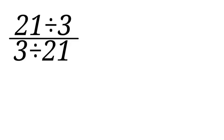Let us start solving from the numerator. Here we have 21 divided by 3, that will give us 7. So we have 7 all over 3 divided by 21.